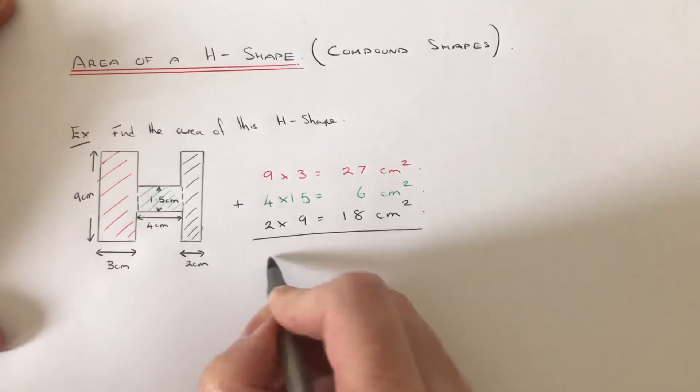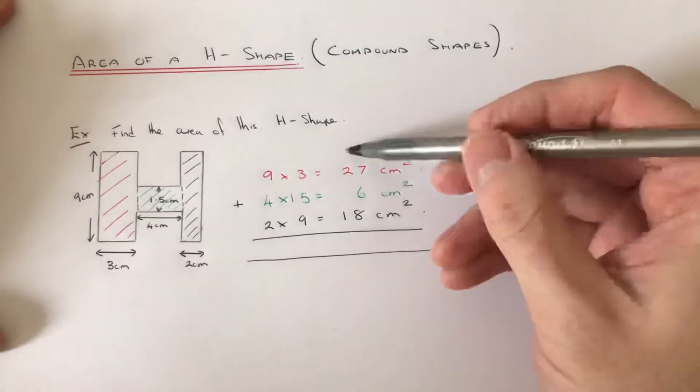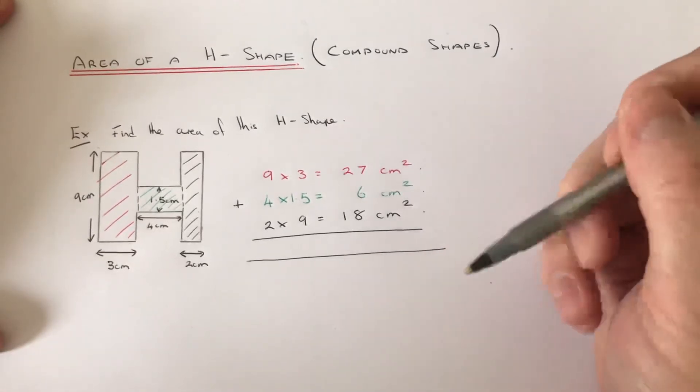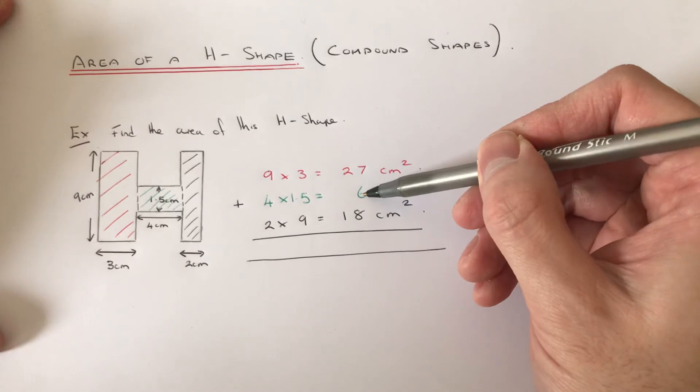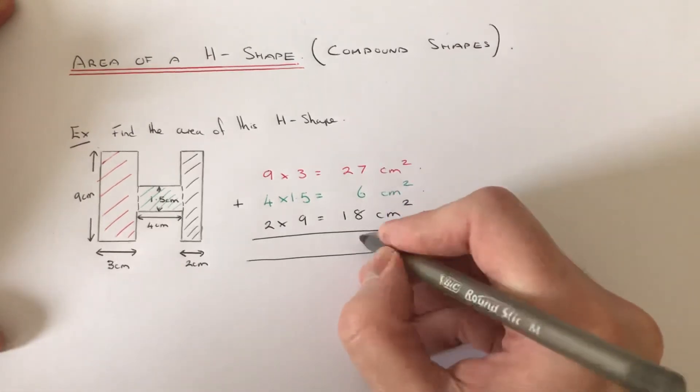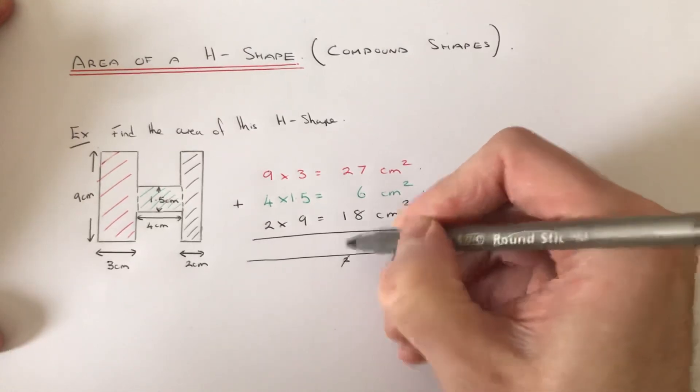Okay, so if you've lined your numbers up neatly, you can add it up in columns. So 8 add 6 is 14, and 7 is 21, and 2, 3, 4, 5.